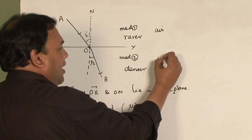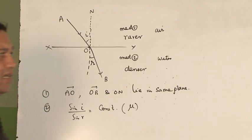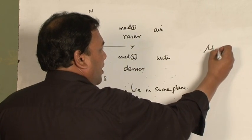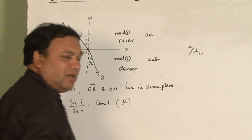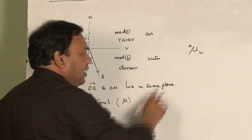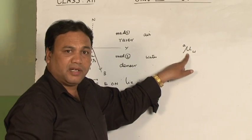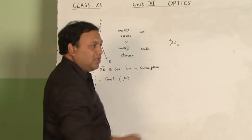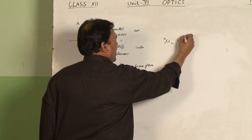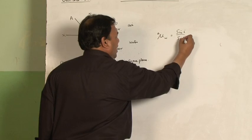If the medium is any medium — let us say water — then I can define the refractive index of water with respect to air. That means the incident light is travelling in air and the refracted light is travelling in water. So in that case, A mu w is written as sin i upon sin r.